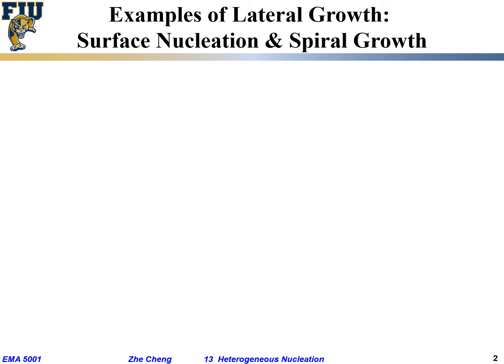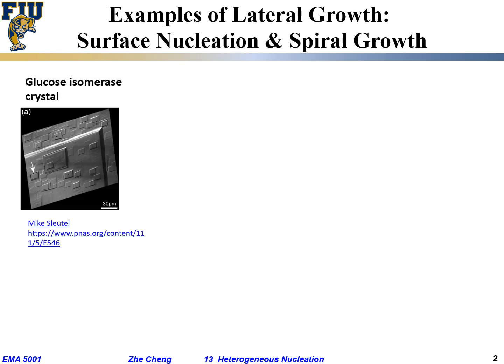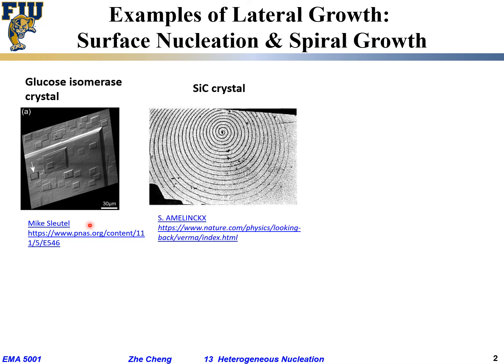Now let's take a look at some practical examples of microstructure or morphology due to surface nucleation as well as spiral growth. First, let's look at this picture — it is essentially a glucose crystal, an organic crystal, showing surface nucleation. You see fine steps showing up on a larger crystal. These are due to so-called lateral growth, and one of the lateral growth mechanisms is called surface nucleation, forming an island that expands on the surface.